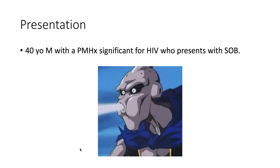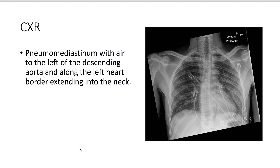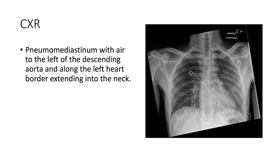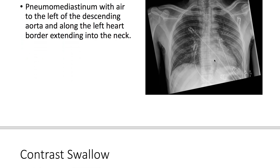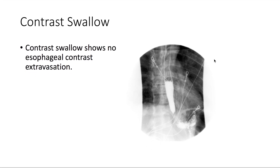For the presentation, we have a 40-year-old male with a past medical history significant for HIV who presents with shortness of breath. Taking a look at the chest X-ray, we note that there's a pneumomediastinum — there's air on the left along the descending aorta and along the left heart border. This air tracks upwards and towards the neck.